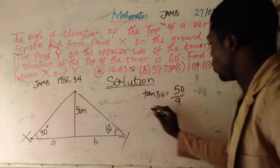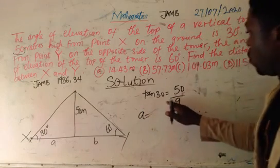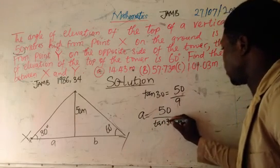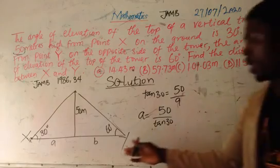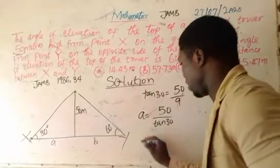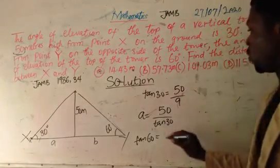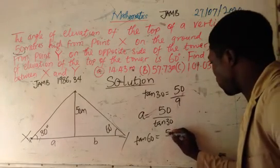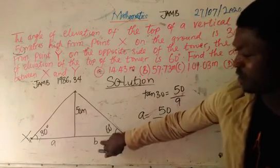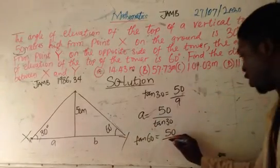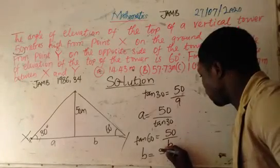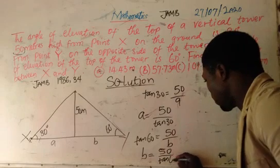To find a, we say a equals 50 over tan 30. Similarly, for tan 60, opposite over adjacent gives tan 60 equals 50 over b, where 50 meters is the height of the tower and b is the adjacent side. So b equals 50 over tan 60.